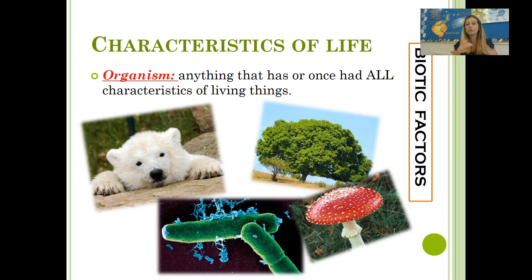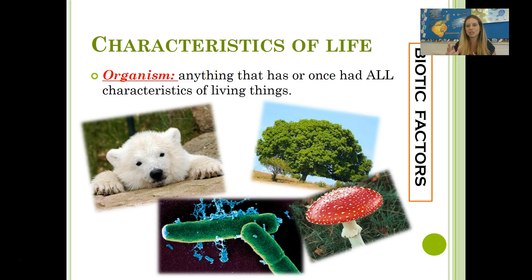We're going to go through each characteristic and talk a little bit about each one. You're going to hear me use the term organism over and over again. The word organism means anything that has or once had all eight characteristics of living things. Sometimes a list will have the eight characteristics of living things; sometimes they'll put things together and call it six or seven characteristics of life — some lists have ten — but the idea is all the same. Organisms are what we call biotic factors: things that are living and have those characteristics of life.